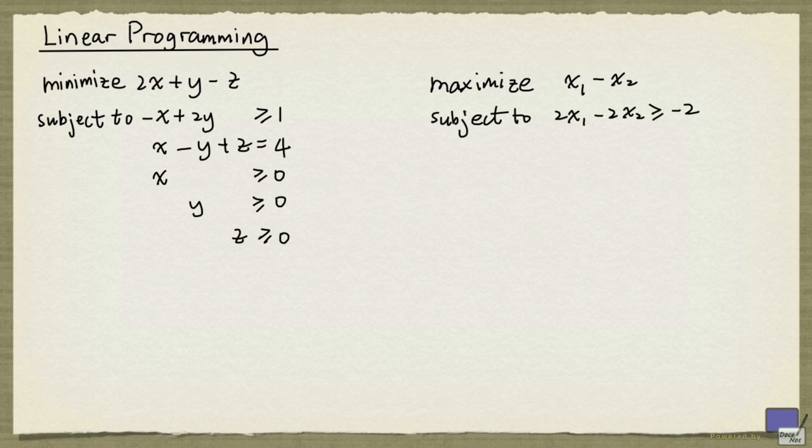Here are two examples of linear programming problems. This one here is a minimization problem, and this one here is a maximization problem. Very often, to save handwriting, we do not write out these words completely. So instead of writing the word minimize, we'll just write min,